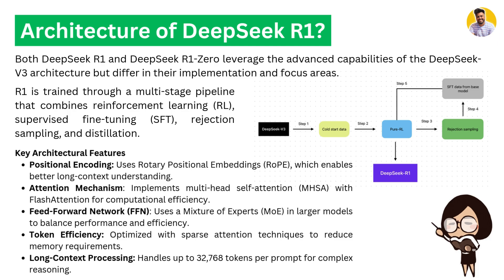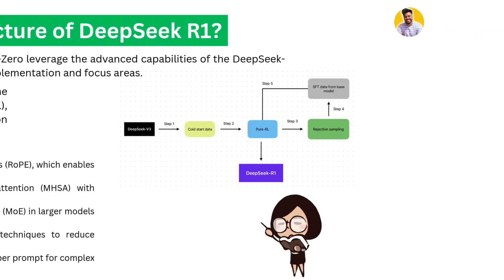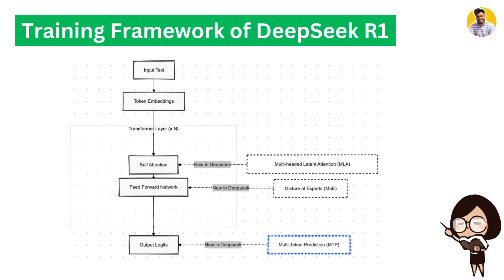The key architectural features of DeepSeek R1 include: rotary position embedding for better long-context understanding; multi-head self-attention with flash attention for computational efficiency; mixture of experts in place of feed-forward networks in larger models; sparse attention techniques to reduce memory requirements; and support for up to 32,768 tokens per prompt for complex reasoning.